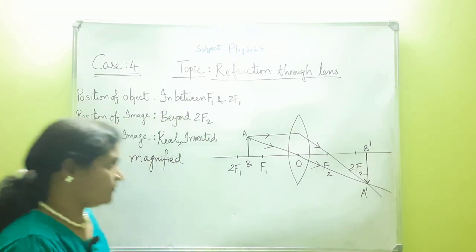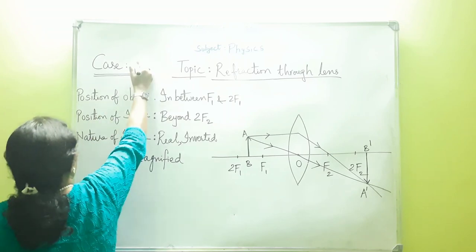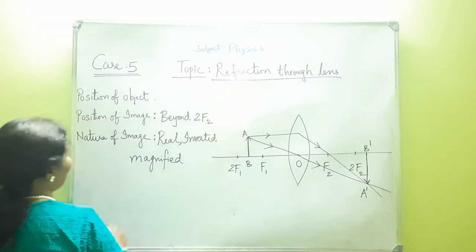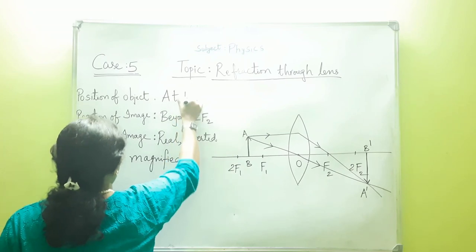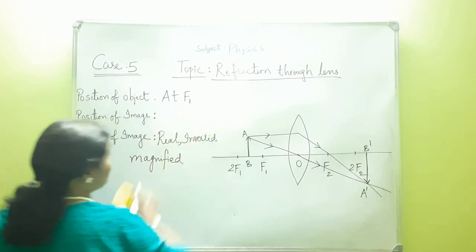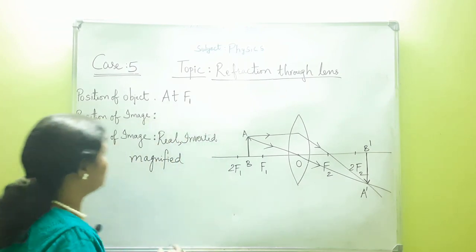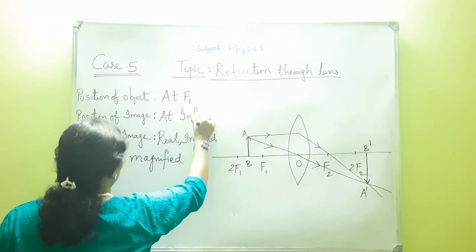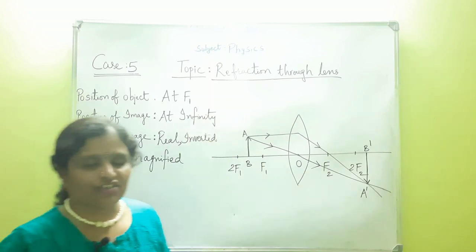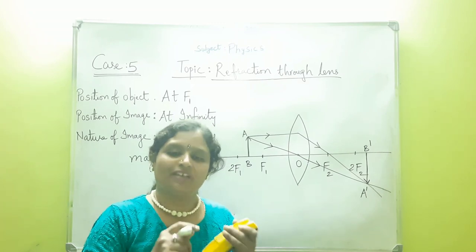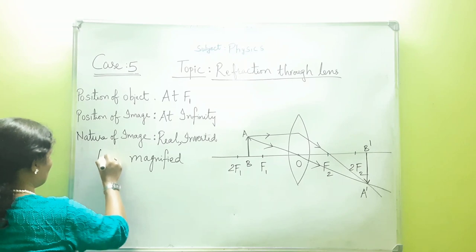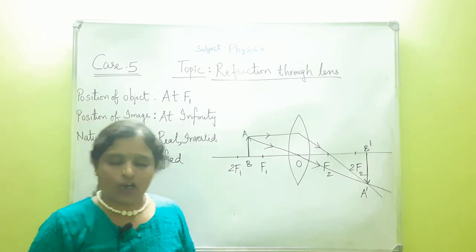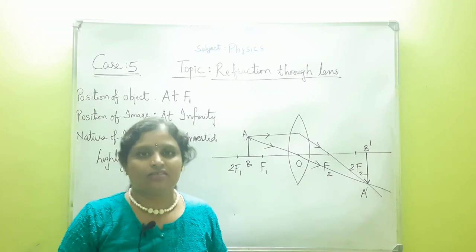Let us move on to case 5. In case 5, the position of the object is at F1 — that is, at the focus. When the object is placed at the focus, the image will be formed at infinity. The nature of the image in this case would be real, inverted and highly magnified.